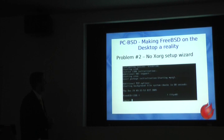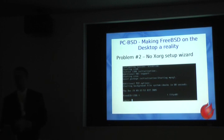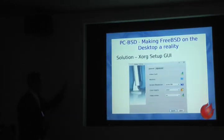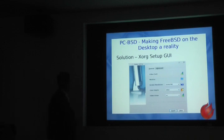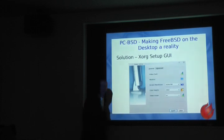The next problem in vanilla FreeBSD is no Xorg setup wizard. If you boot FreeBSD for the first time, you get dropped to a command prompt and if you're a desktop user, you are clueless at this point — 'how do I get a mouse? How do I get a desktop?' So we developed our own tool called the Xorg setup GUI. Very simple options: resolutions, color depth, and you can pick your driver. It shows monitor and video card info so users know what they're running.